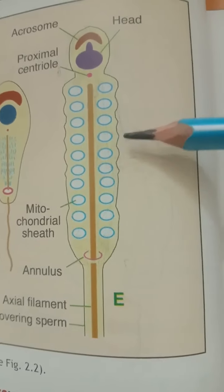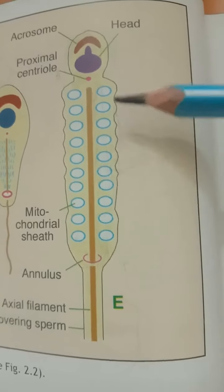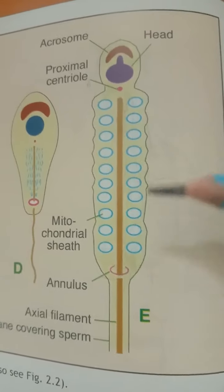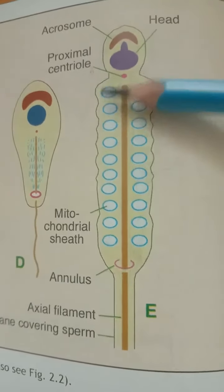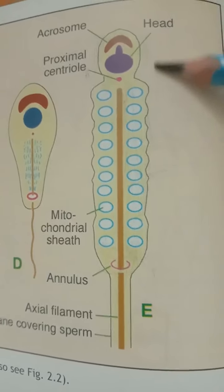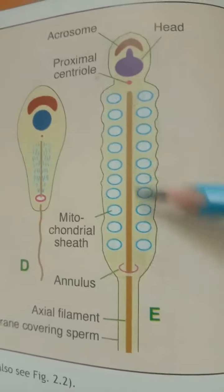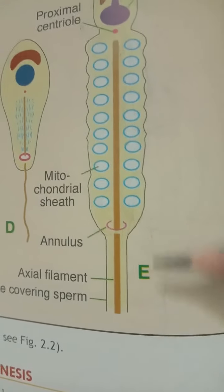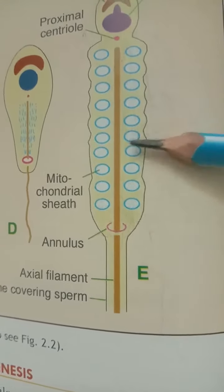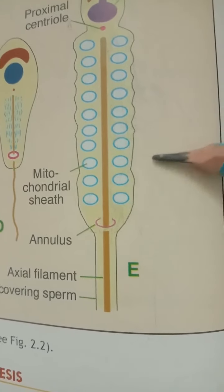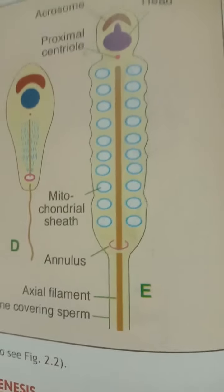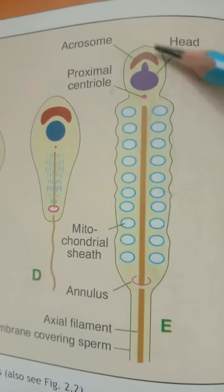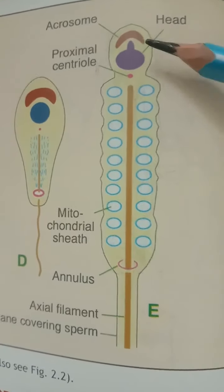This part forms the middle piece of the spermatozoa. Most of the cytoplasm is shed out and the cell membrane remains, covering the entire spermatozoa. The axial filament is concerned with the movement of the spermatozoa, while the mitochondria in the middle piece supply energy for the movement. The head contains the nucleus, which during fertilization forms the male pronucleus.